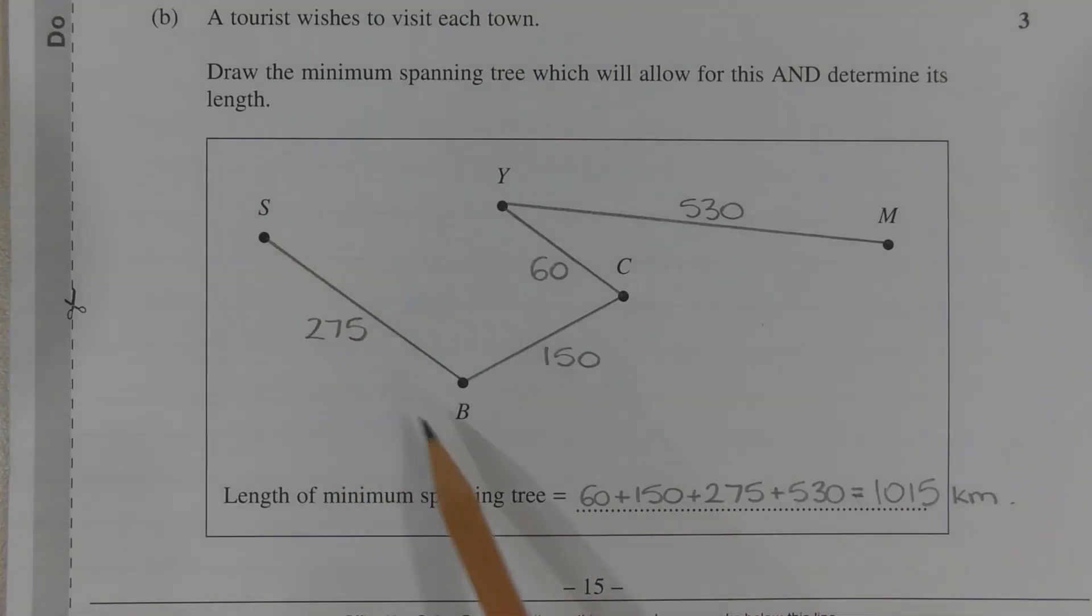So drawing the minimum spanning tree here, the length of the minimum spanning tree is found by adding the four edges together. So 60 plus 150 plus 275 plus 530 is equal to 1015 kilometers.